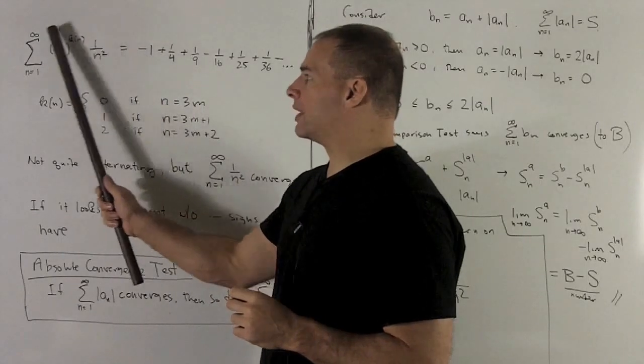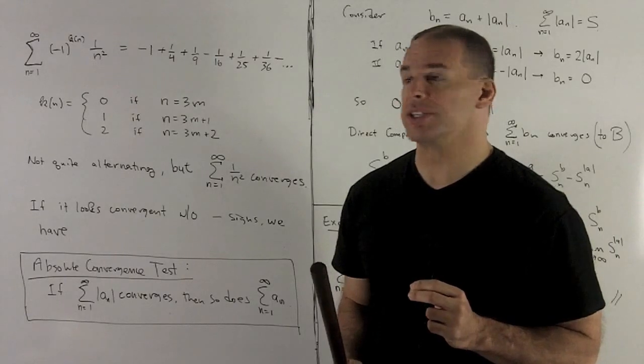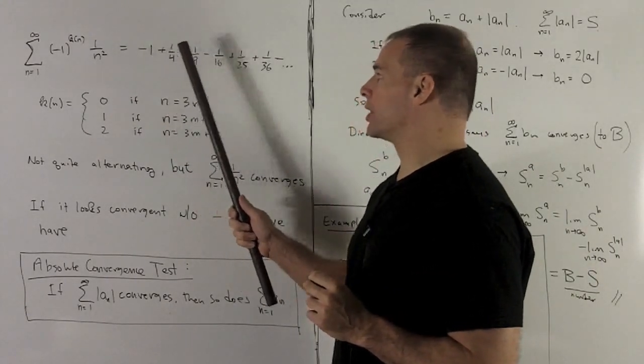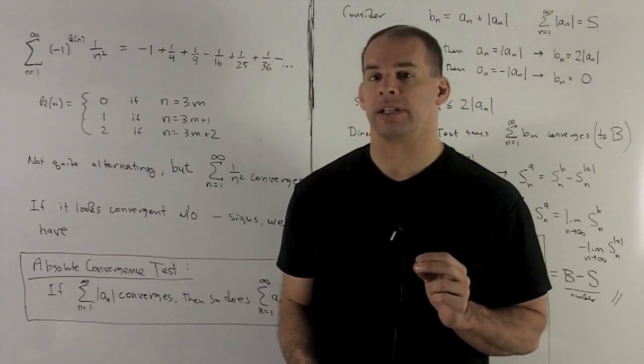So if I throw away the sign stuff, the 1 over n squared is going to lead to a convergent series. If I take a look at what happens, we start with a minus, plus, plus, minus, plus, plus. So definitely not an alternating series.